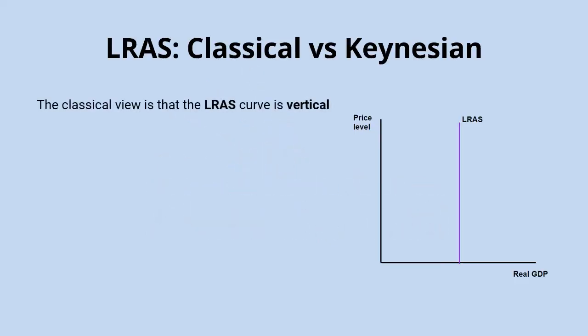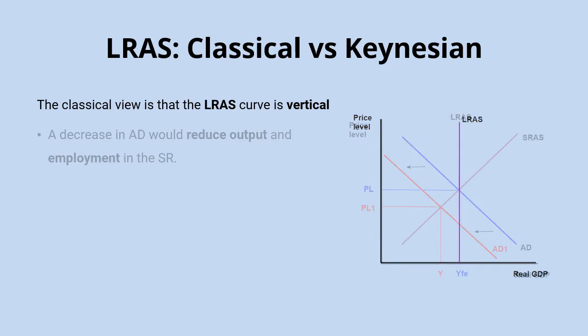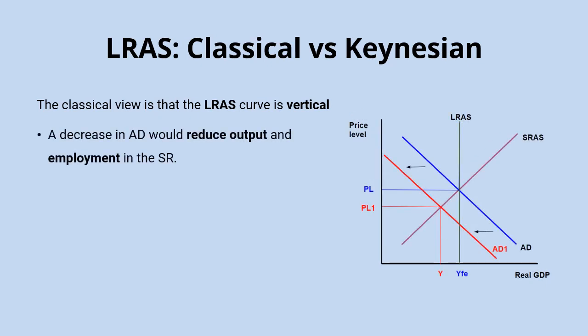The classical view is that the long run aggregate supply curve is vertical. To explain this, we can run through what classical economists believe should happen to the economy in response to a shift in aggregate demand. If aggregate demand shifts to the left, there'll be a movement along the short run aggregate supply curve to a new equilibrium at a lower price level and lower output, bringing down inflation, real GDP, and employment levels.